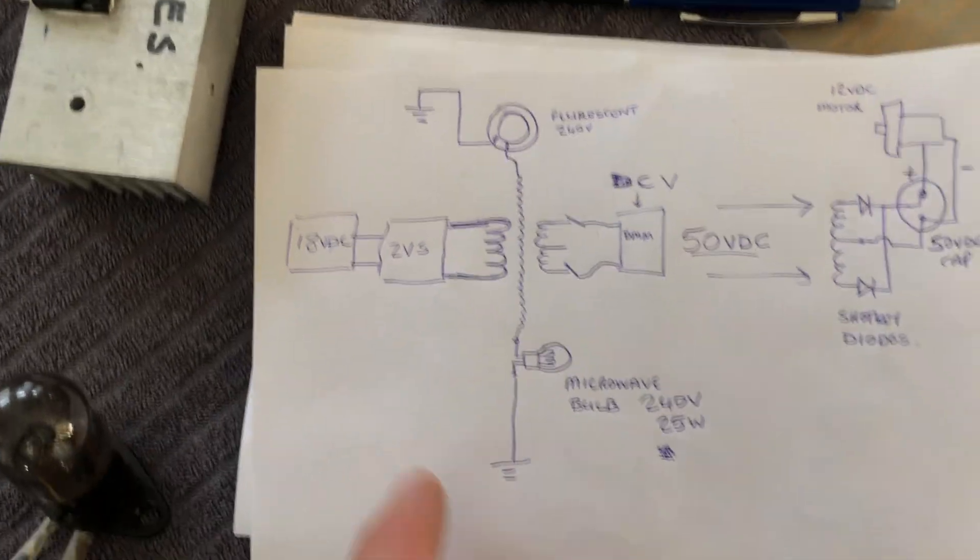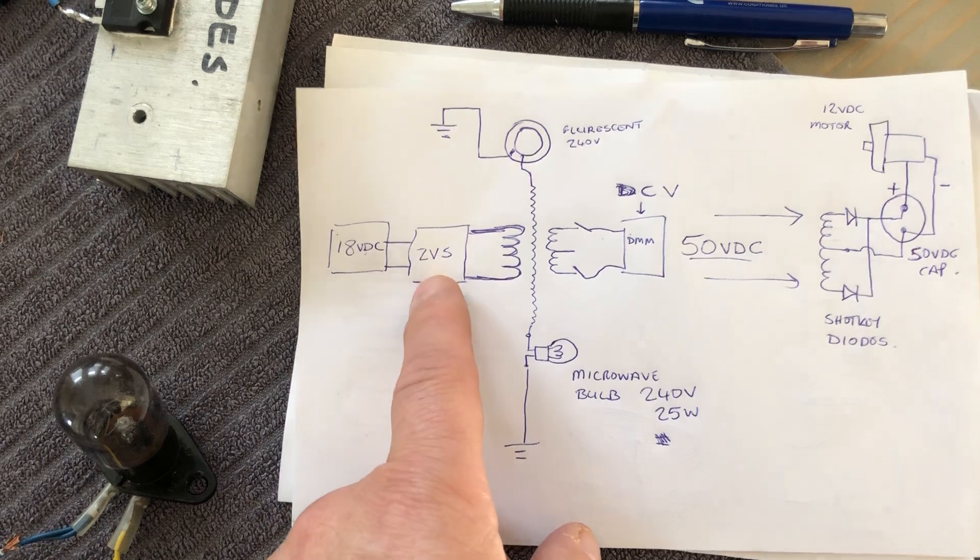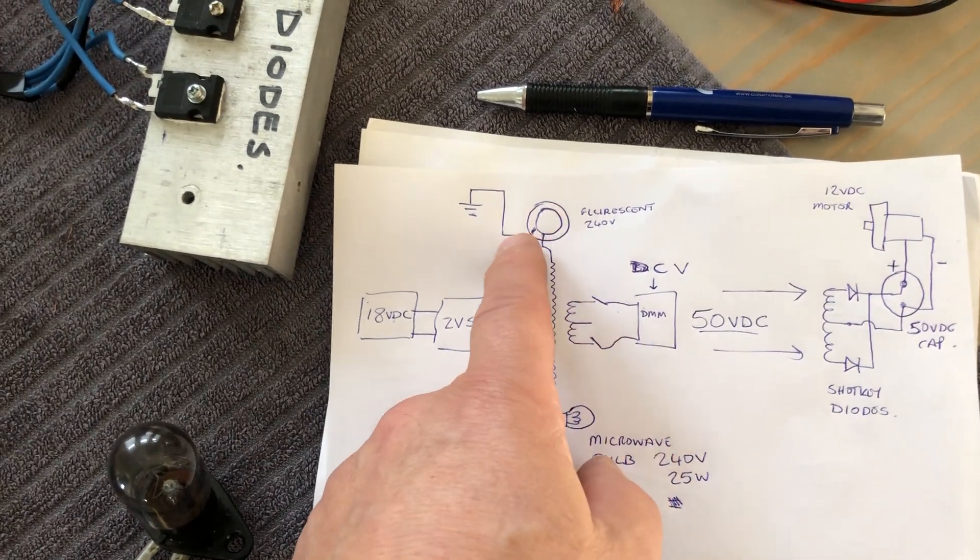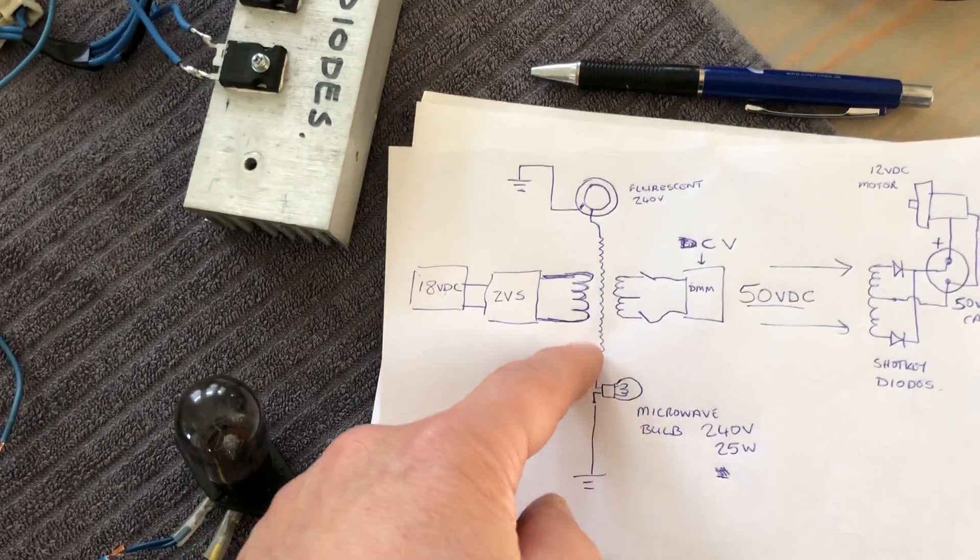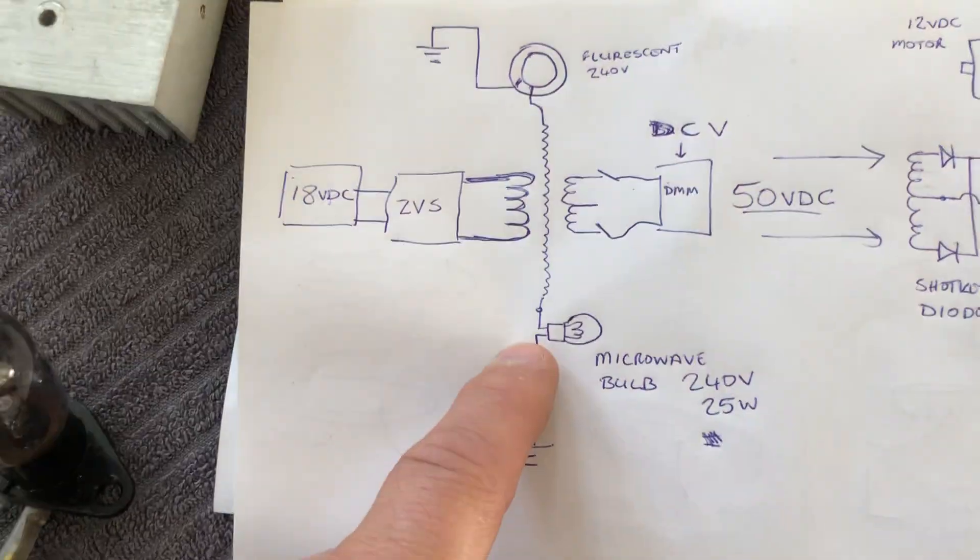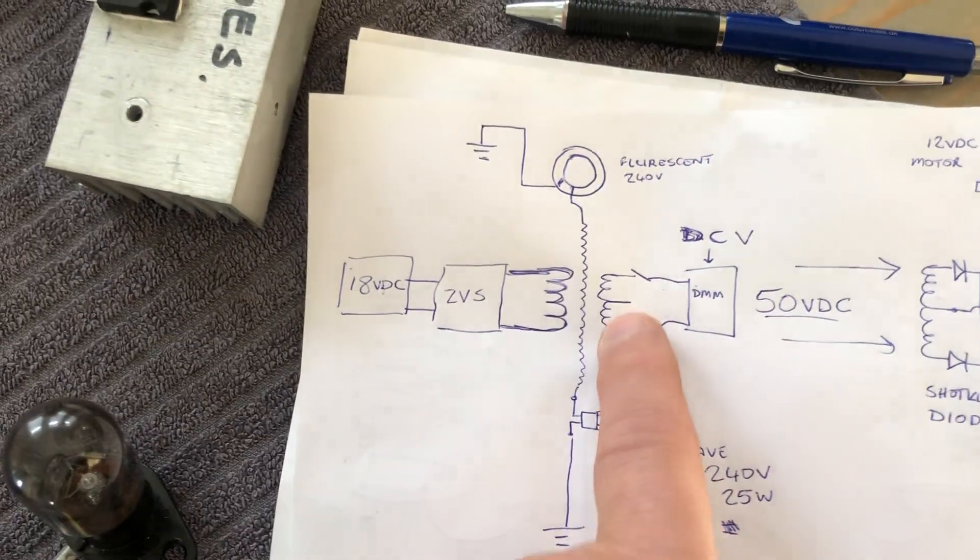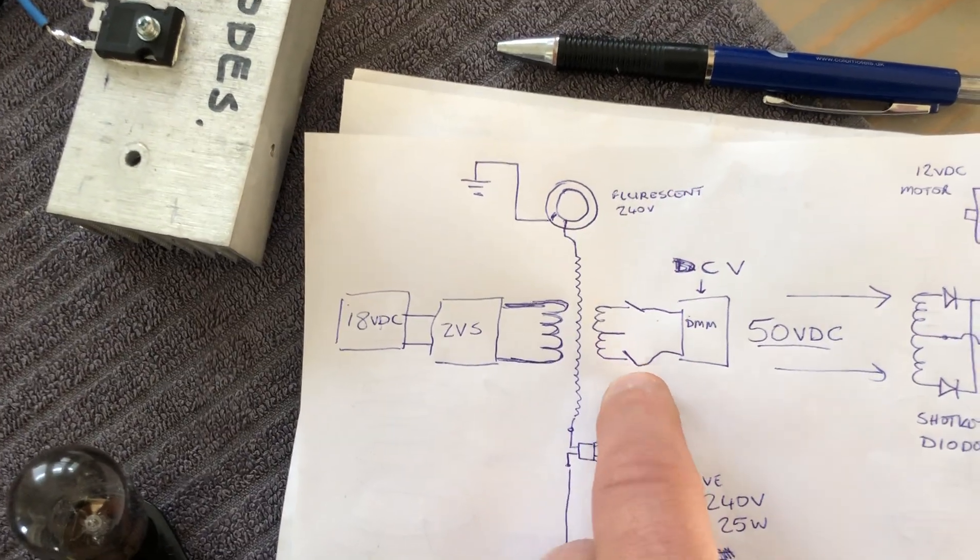So, this is the drawing. 18 volt, ZVS, L1, L2, fluorescent tube directly to ground, microwave bulb directly to ground, bifiler L3, we can call that.